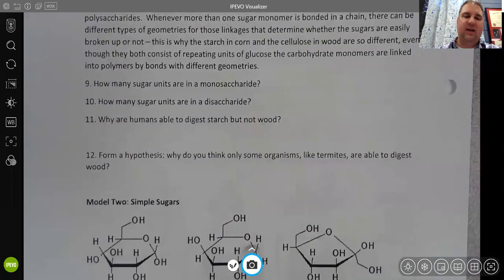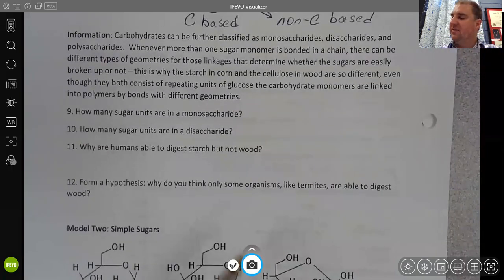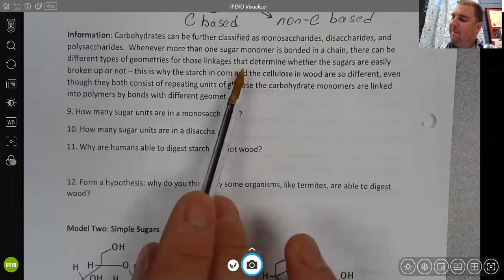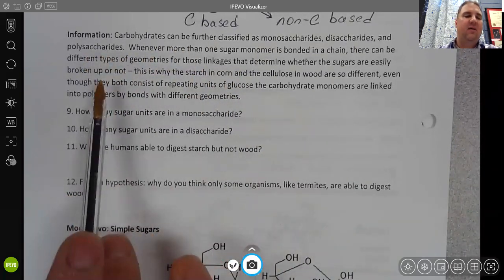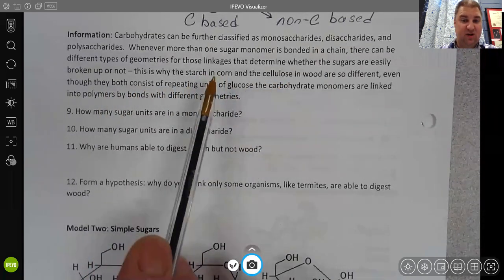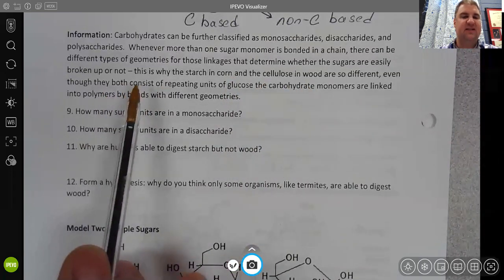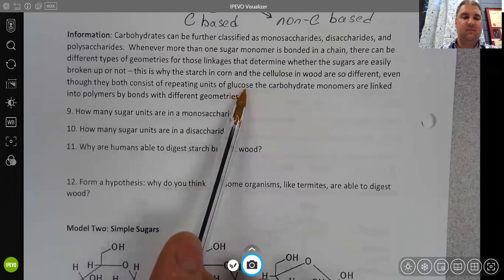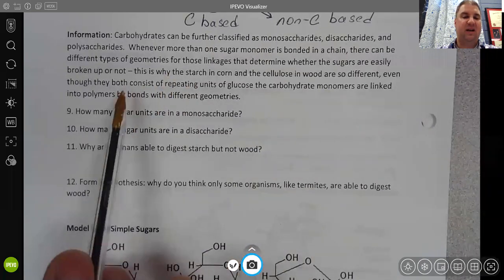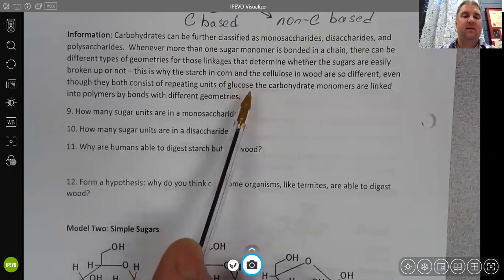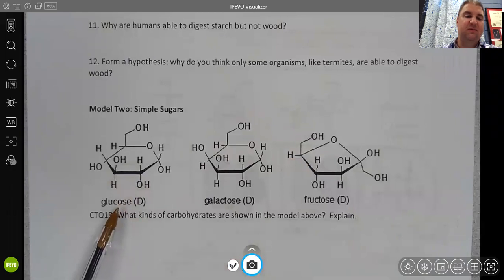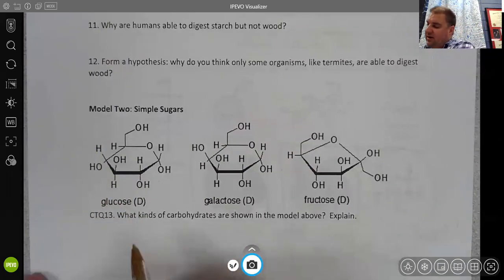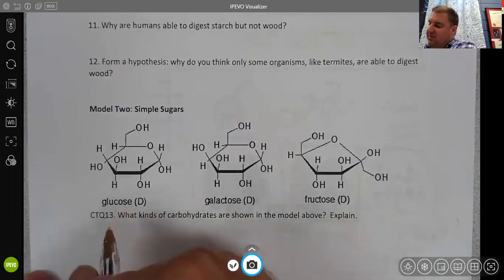To answer that you have to go back to the information above. One of the big things is that polymer chains of sugars that make up carbohydrate chains like polysaccharides, whether we're talking about starch in corn or cellulose in wood, they both consist of repeating units of glucose. The carbohydrate monomers are linked into polymers by bonds with different geometries. So glucose is a carbohydrate monomer and glucose is one of the molecules shown in model 2. If glucose is a monomer, then that means that glucose and these others are all examples of monosaccharides.